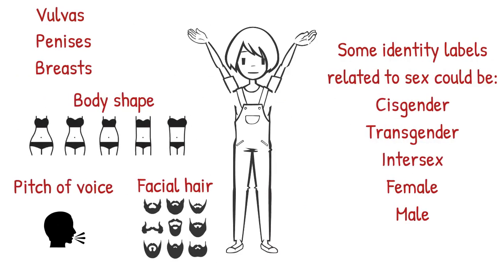Some examples of sex characteristics might be vulvas, penises, breasts, body shape, facial hair, or the pitch of someone's voice. But again, it's up to you what you think goes here. Some identity labels related to sex could be male, female, transgender, or intersex, among others.